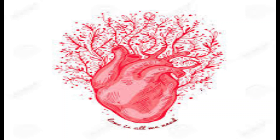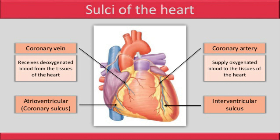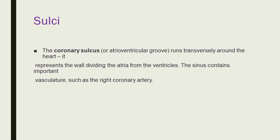Sulci of the heart. The heart is a hollow structure; on the interior it is divided into four chambers. These divisions create grooves on the surface of the heart, known as sulci. The coronary sulcus, or atrioventricular groove, runs transversely around the heart. It represents the wall dividing the atria from the ventricles.